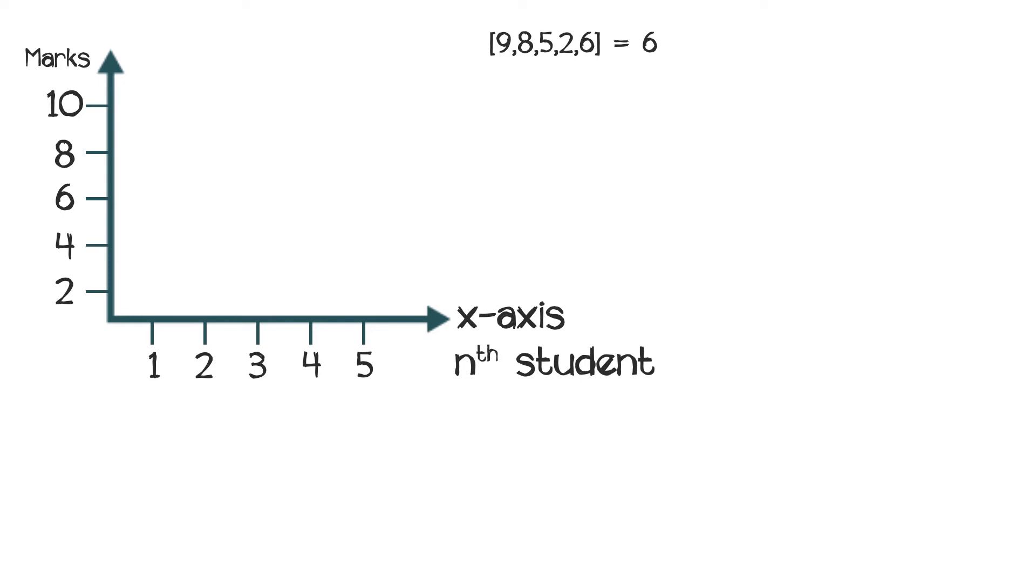So first student scores 9 marks, second student scores 8 marks, third student scores 5 marks, fourth student scores 2 marks and the fifth student scores 6 marks. Now if I am to create a mean line, the mean line of the data would be a line across the sixth mark, because 6 is the mean as we have just calculated here.